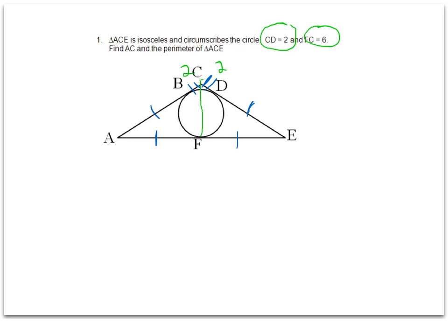And because we know that point F is a point of tangency, we can go ahead and put that right angle symbol in, and we can outline the triangle CFE.